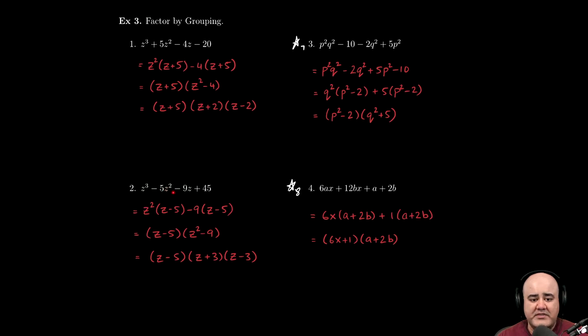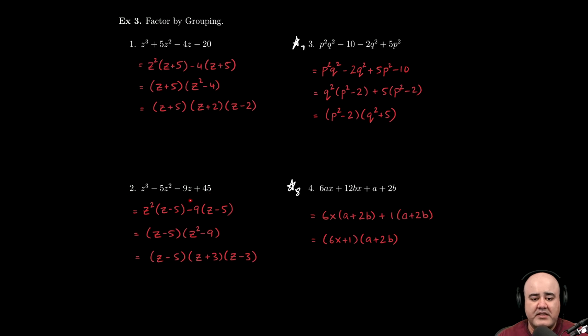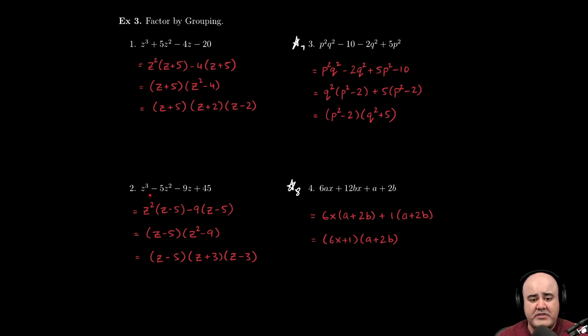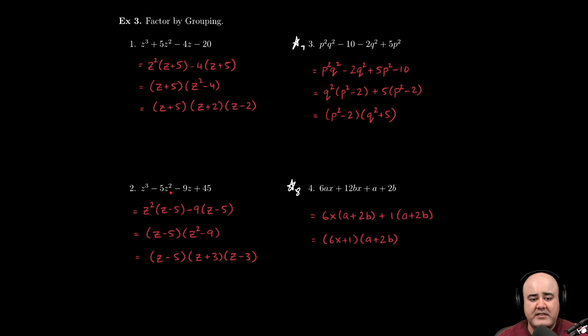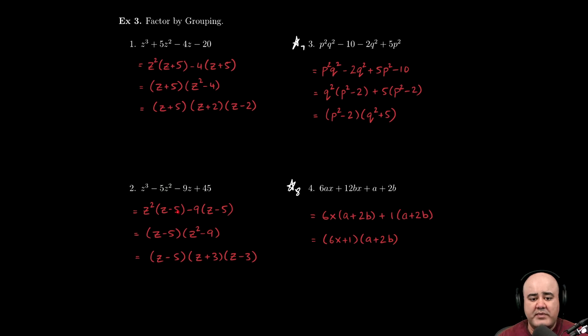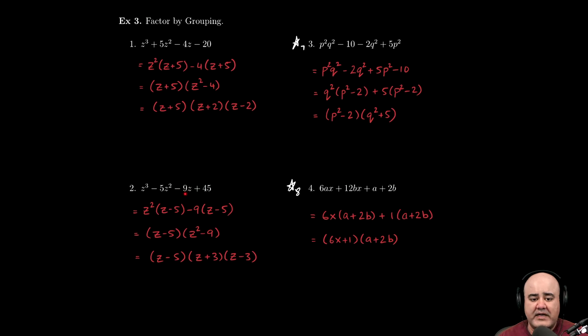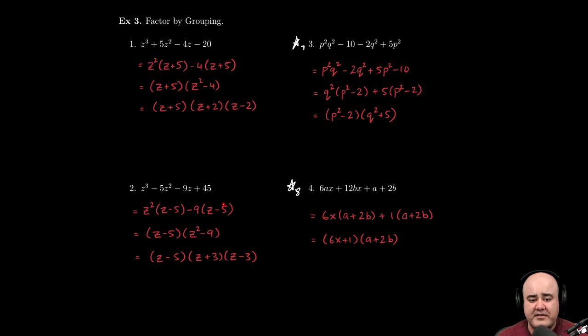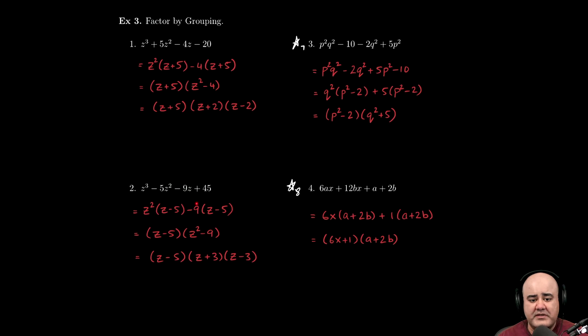Similarly, we have z cubed minus five z squared minus nine z plus 45. There is no GCF. We have four terms, so we think of grouping first. Between these two terms, we can try to factor out a z squared, and then we're left over. Z cubed divided by z squared is going to be a z. Negative five z squared divided by z squared will be negative five. Now, here, we want to think again. We can factor out a nine or a negative nine. But if we factor out a nine on the inside, we're going to be left over with negative z here. But that's not the same as this. And in order to do factoring by GCF twice, we have to have the same common factor appear inside. If we factor out a negative nine instead, negative nine z divided by negative nine is z. 45 divided by negative nine is negative five.